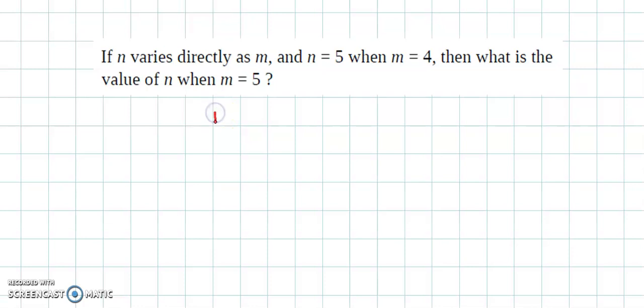So here we have been given n varies directly as m. If we remove the sign of proportionality, we can introduce the constant of proportionality. So we have n is equal to k times m.